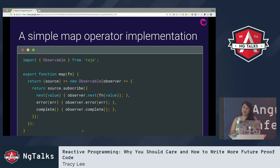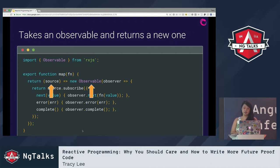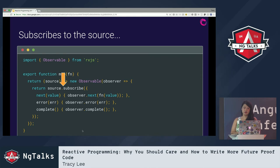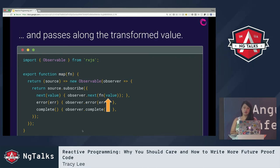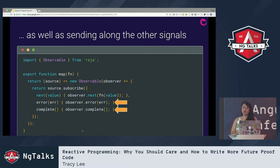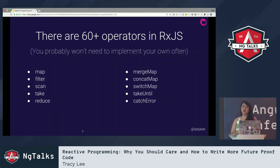Operators are super cool, and if you wanted to look under the hood and figure out how they're implemented, here's a simple map operator implementation. All we're doing is taking a simple observable and returning a new observable, then subscribing to it instead of calling it like a function. We pass along the transformed value and emit it by calling observer.next — and with observers, you automatically get error and complete methods if you need them. There are over 60 operators in RxJS; you probably won't ever have to implement your own.